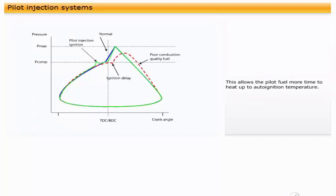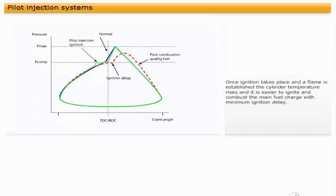This allows the pilot fuel more time to heat up to auto-ignition temperature. Once ignition takes place and a flame is established, the cylinder temperature rises, and it is easier to ignite and combust the main fuel charge with minimum ignition delay.